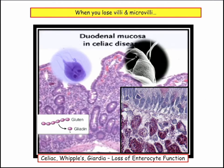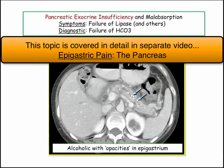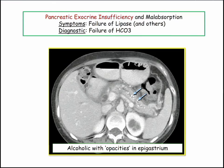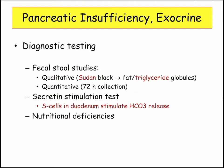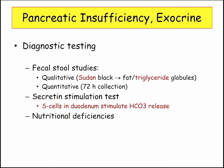Pancreatic exocrine insufficiency — failure of lipase, failure of bicarbonate. Calcification and alcoholic opacities in the mid-epigastrium. Diagnostic workup includes the secretin stimulation test. For a patient with diarrhea and suspected pancreatic insufficiency, the first test is looking for triglycerides and fats in the stool — qualitative fat stain on a stool sample. If positive, you can do a 72-hour stool collection or work up the cause of malabsorption from there.